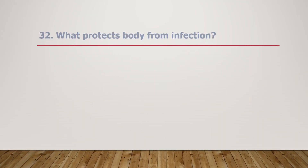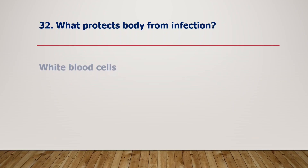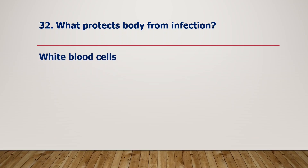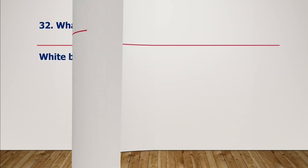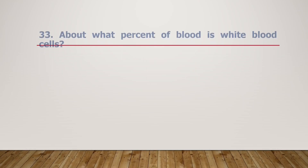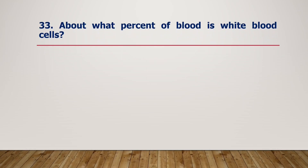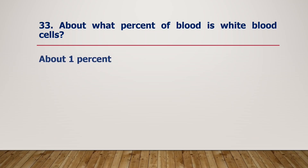What protects the body from infection? White blood cells protect the body from infection. About what percent of blood is white blood cells? About 1% of blood is white blood cells.